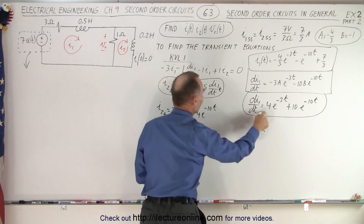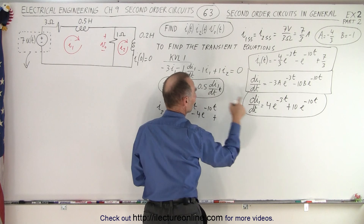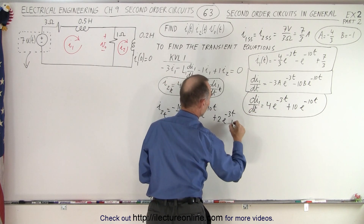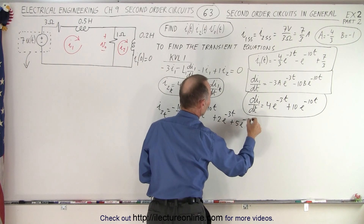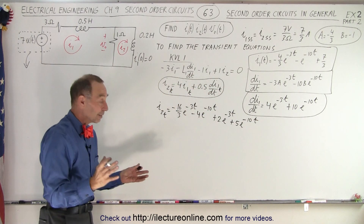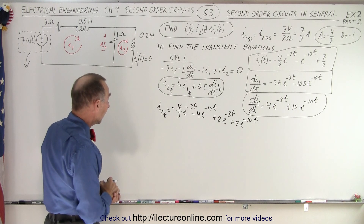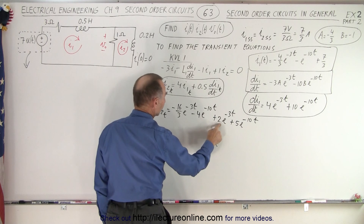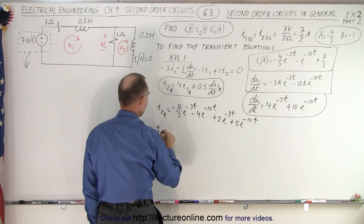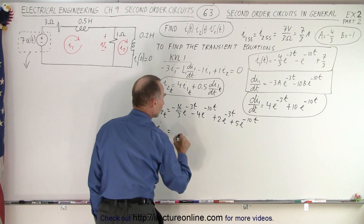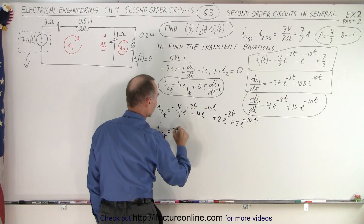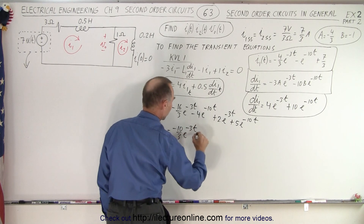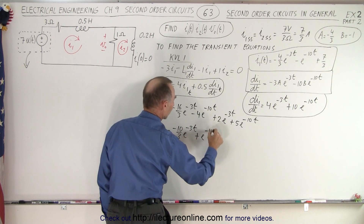Now plus half times this equation: 0.5 times this gives me two e to the minus three t, and half times this gives me plus five e to the minus ten t. Now I need to combine those — minus sixteen over three plus two, which is plus six over three — so i2_transient equals minus ten over three e to the minus three t, and minus four plus five gives plus e to the minus ten t.